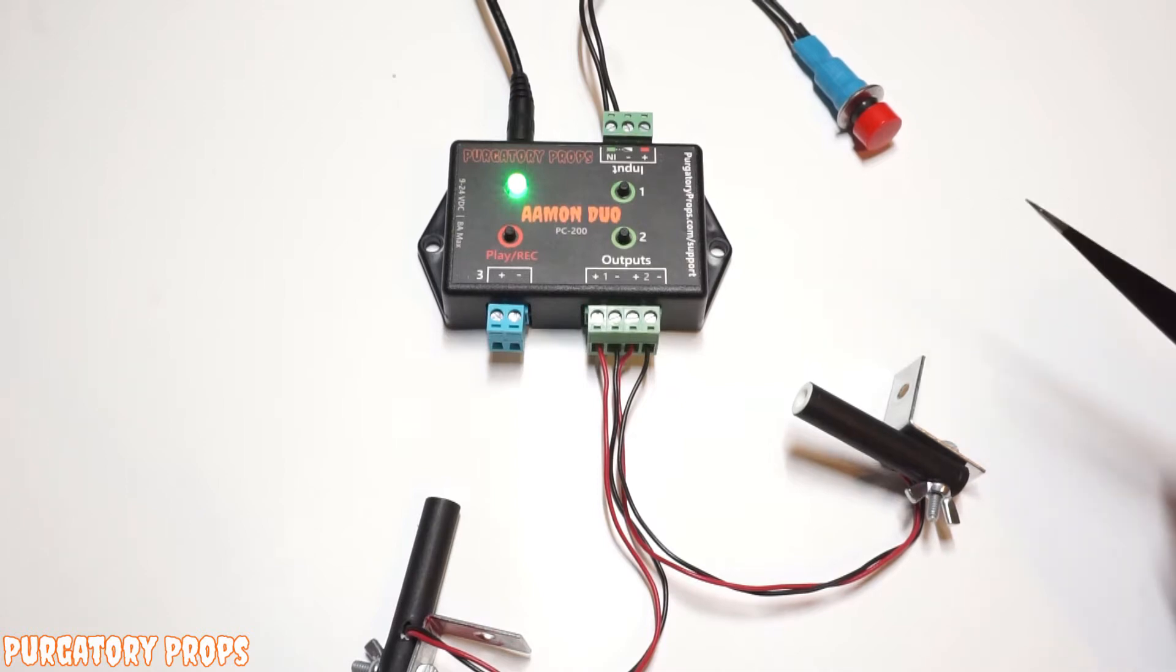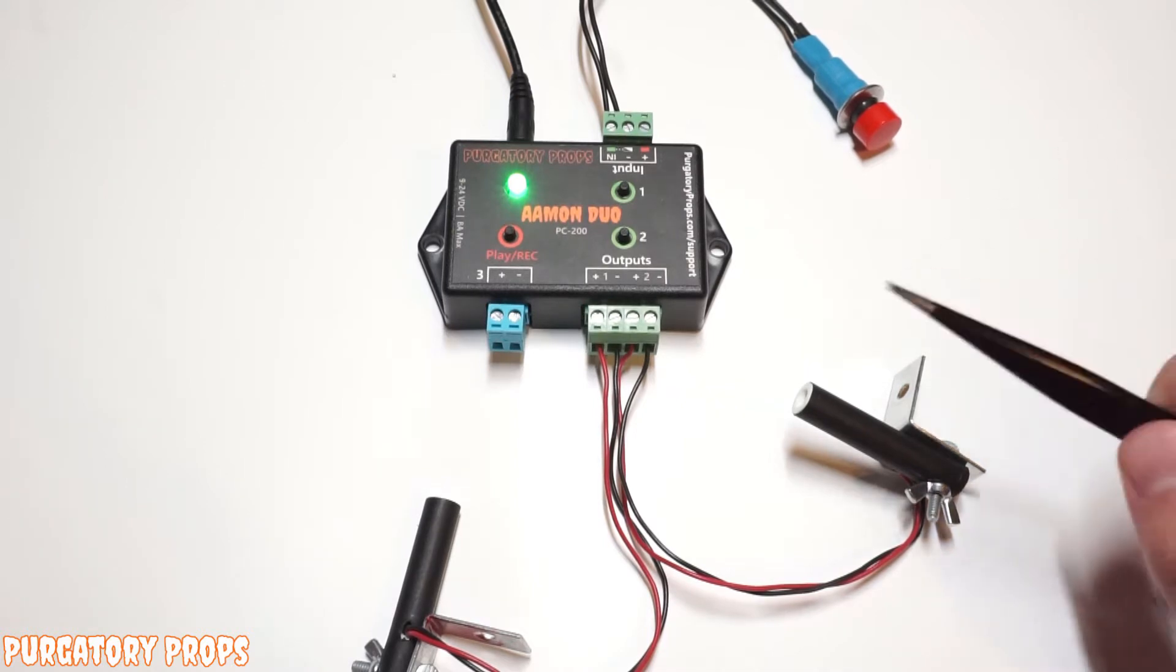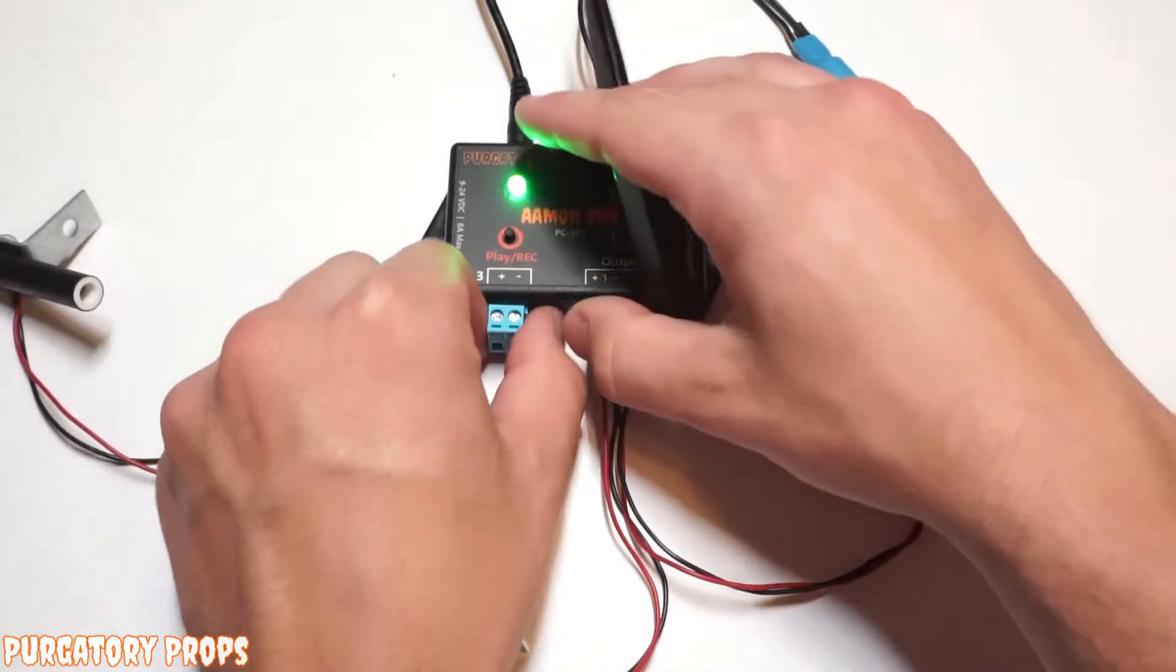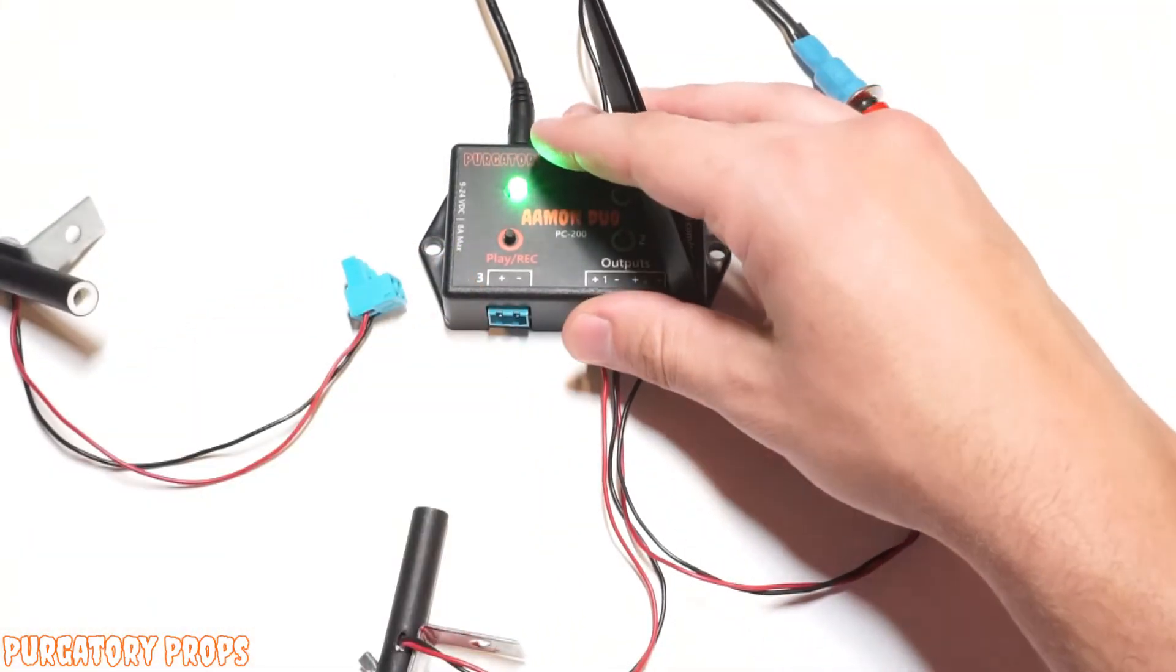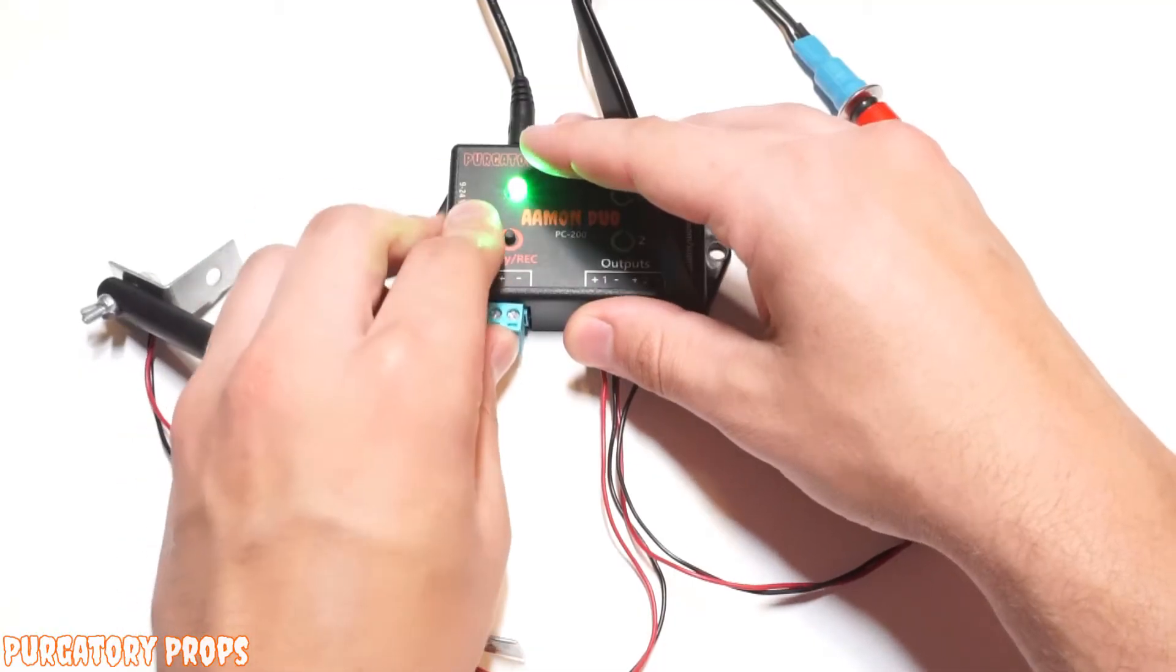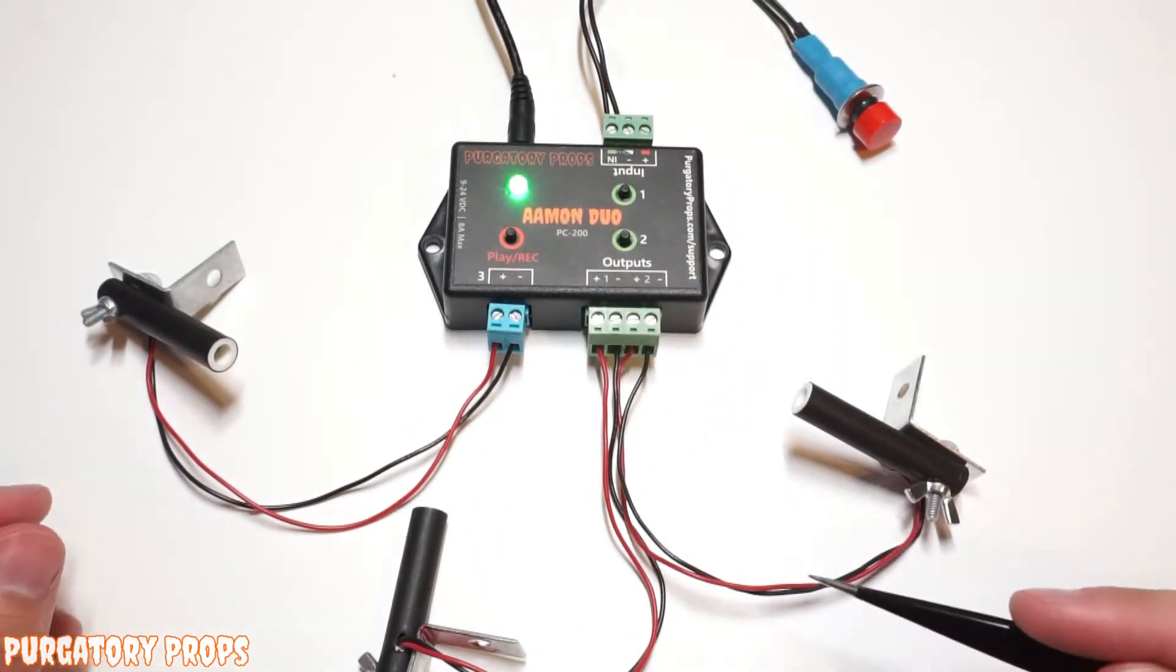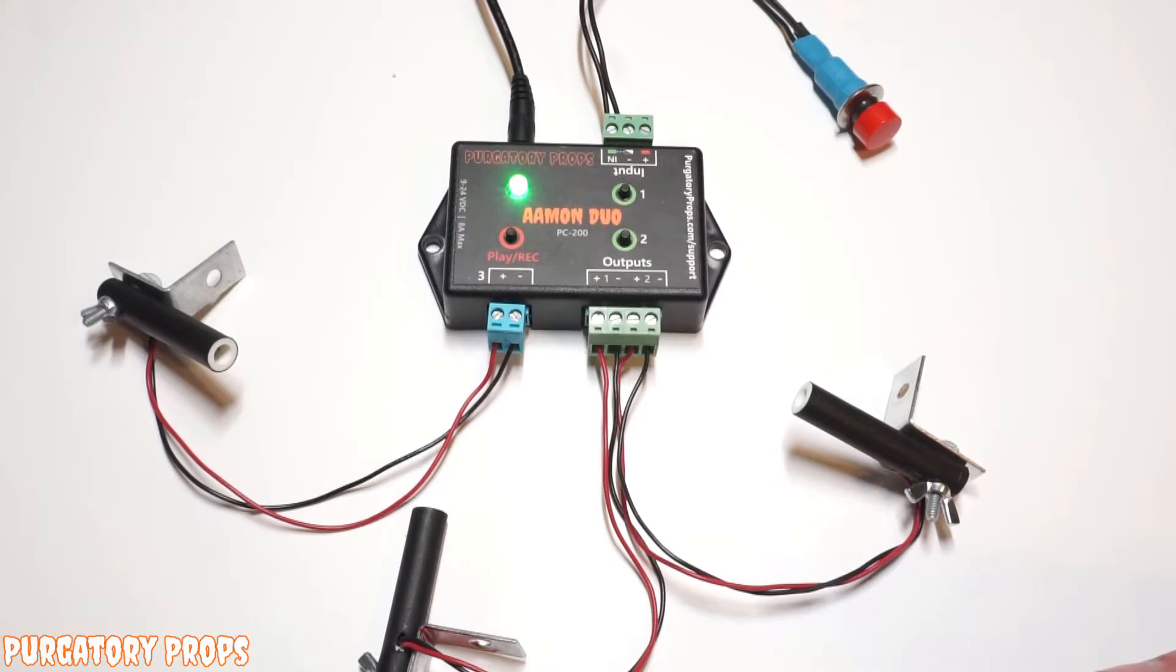So the third output is just one of the things that makes the Amon Duo so special. Let's look at its default behavior. So we changed our setup a little bit. We just have all LEDs now just to simplify things.